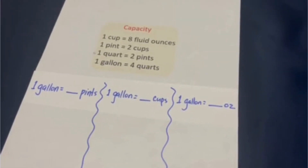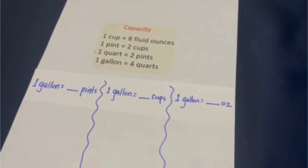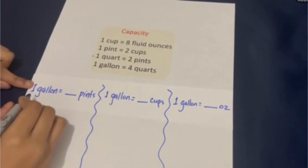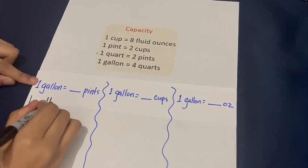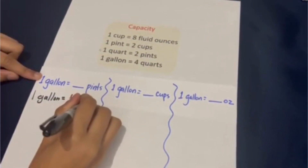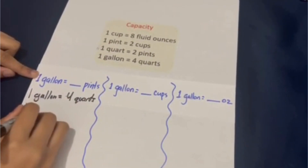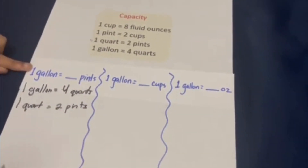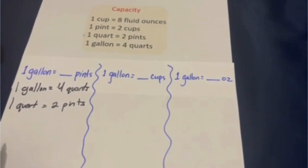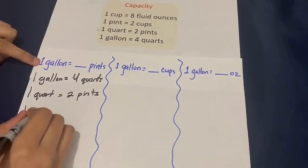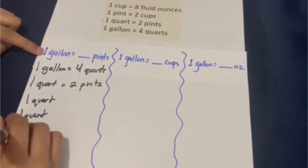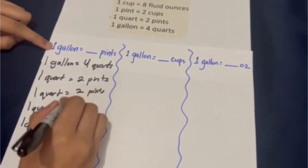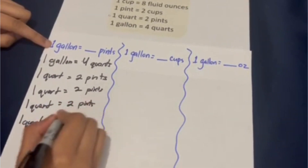Now we're going to be converting gallons to pints, gallons to cups, and gallons to ounces. I'm going to start by converting one gallon into pints. What we know is that one gallon is equal to four quarts. We know that one quart is equal to two pints. Meaning that we're going to have to do one quart plus another quart plus another quart plus another quart, or two pints plus two pints plus two pints plus two pints.